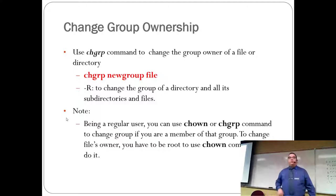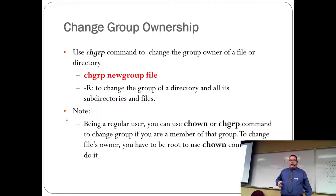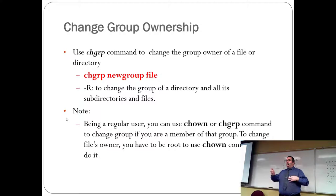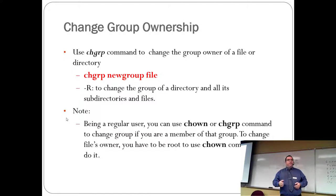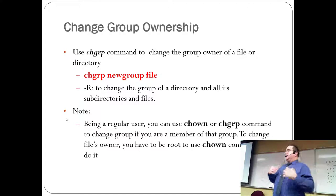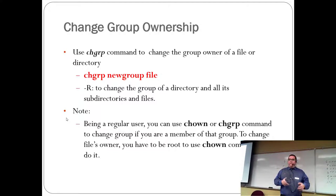There's another command called chgrp — change group — which changes the group owner of the file, also with -R for recursive. If you're a regular user, you can change the ownership or group of a file only if you're a current member of that group. However, if you want to change the file's owner entirely, you have to use chown as root. You can change the group to let members of that group see the file, but you still own it.